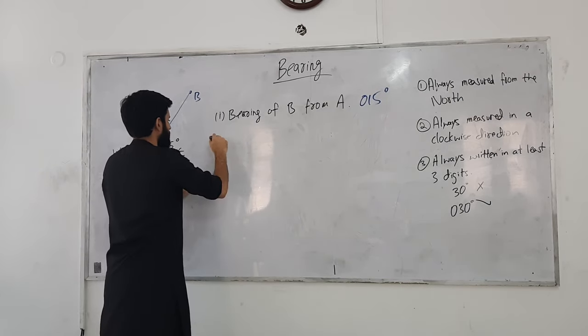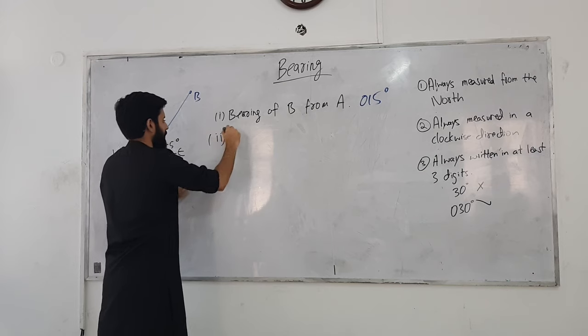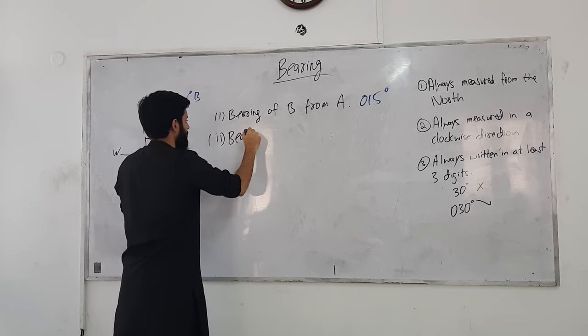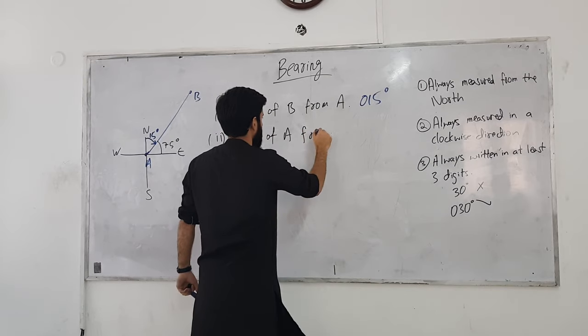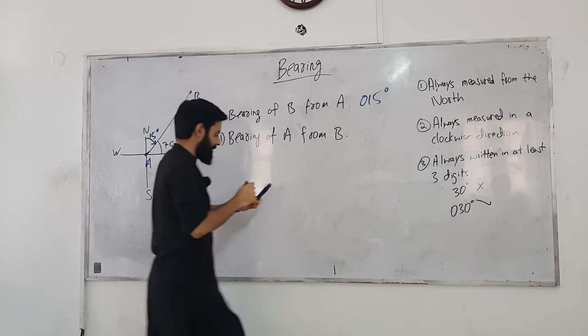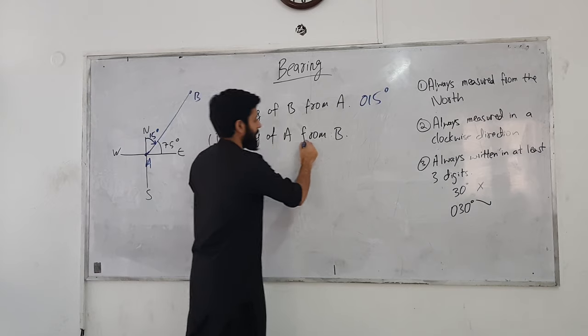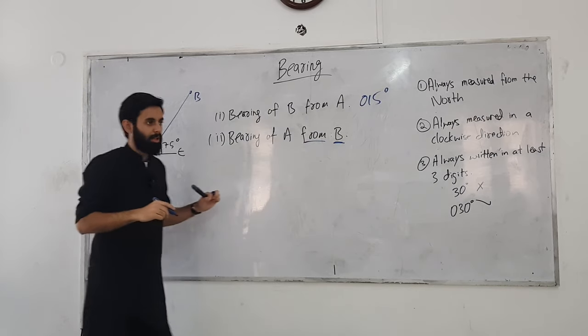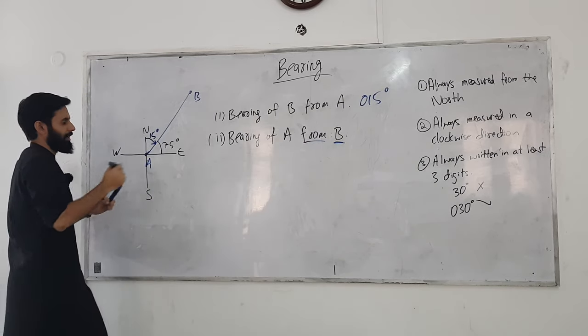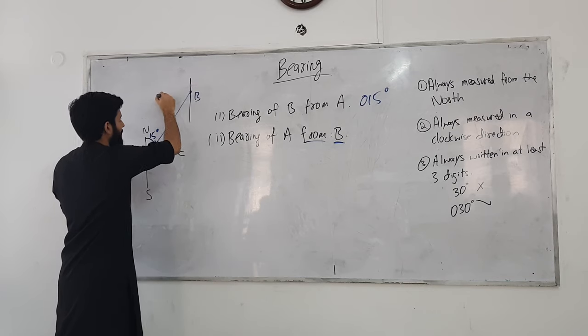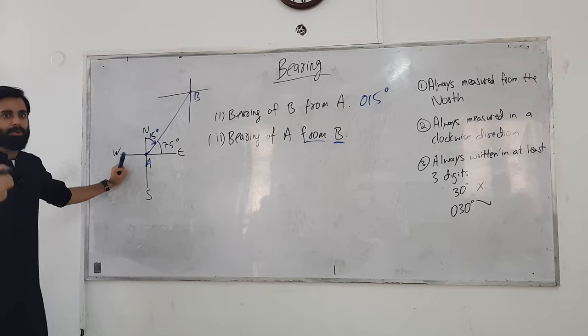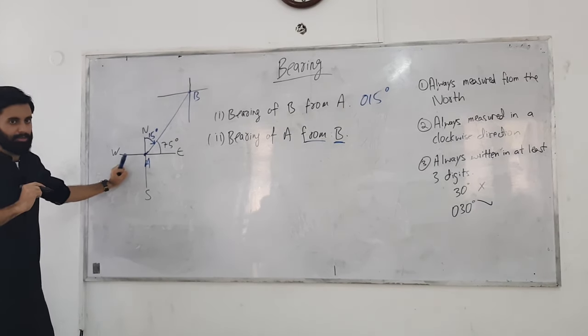Alright, now suppose you're asked to find the bearing of A from B. The bearing of A from B. Now, we always know what to do. We always know what to do after from. What to do after B? So, that means what we will do north or the whole compass, we will do K and B. Alright, the second you do that, the second you have two compasses. You know what happens? You get a pair of alternating angles.